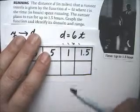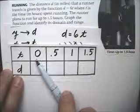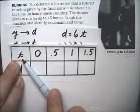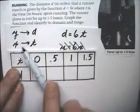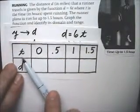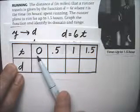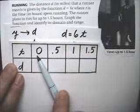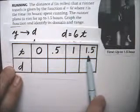By the way, that is our domain. Our domain means what is the t going to be. Usually when we're looking at the domain, we look at the x, but our x is a t in this case. So the domain is going to be t greater than or equal to 0, and t less than or equal to 1.5.